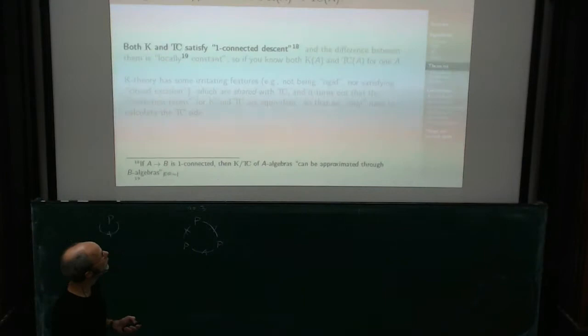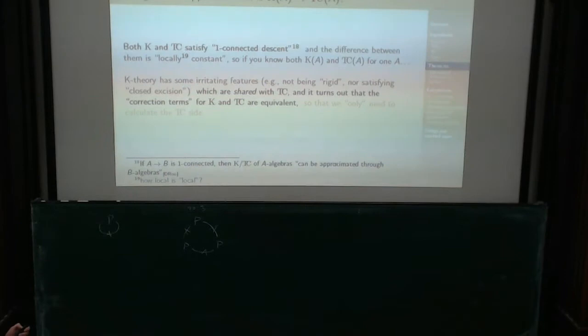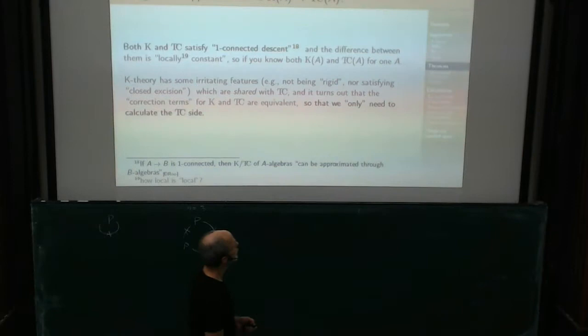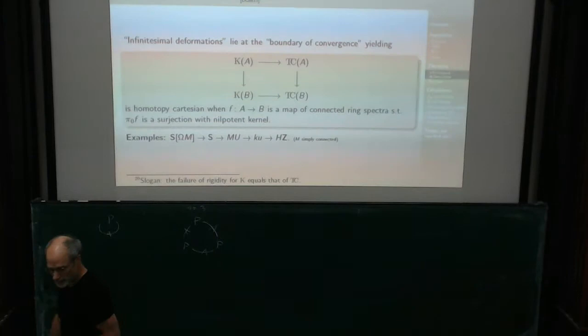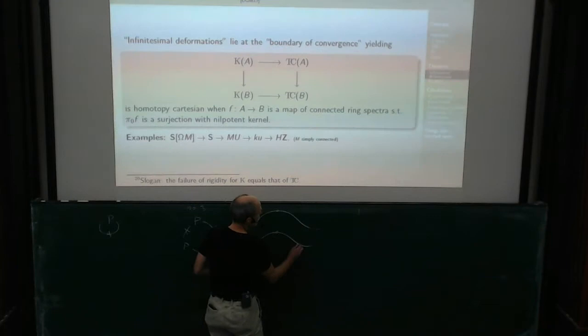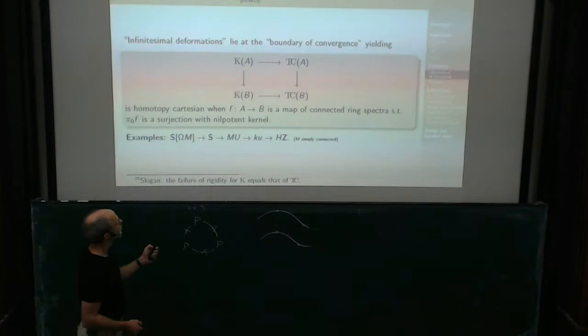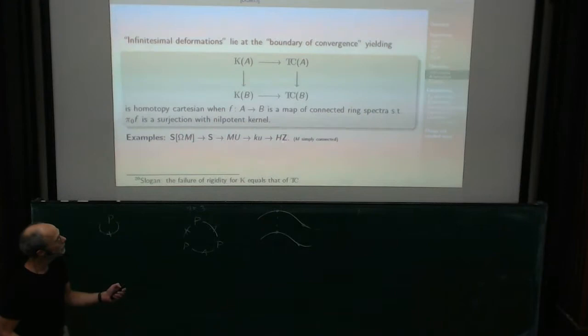We have these two theories, and we were in the middle of discussing how good an approximation TC actually was. Let's do a fast forward. We had that they were the same locally. So if you know K-theory at one point, and you know TC at the same point and another point, then hopefully you will be able to reconstruct K-theory at that point. There are ring spectra that are awfully different, but they all have π₀ equal to the integers and are connected through this sort of analysis.